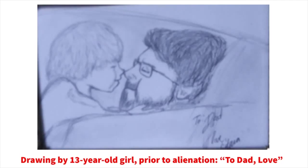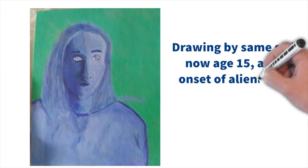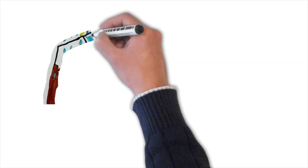Here is a drawing by a 13-year-old girl before alienation. To Dad, Love. Drawn by the same girl, now age 15, after the onset of alienation. Her self-portrait is entitled, I'm Ugly.